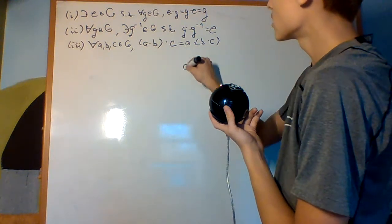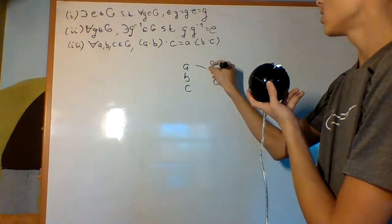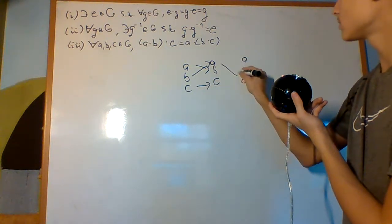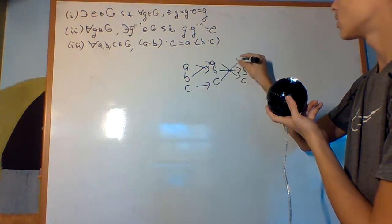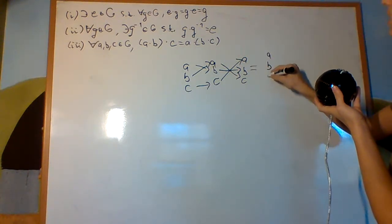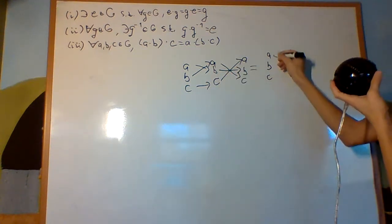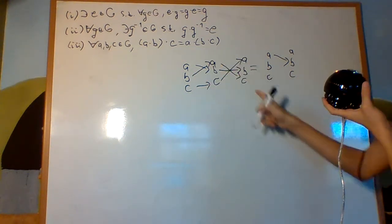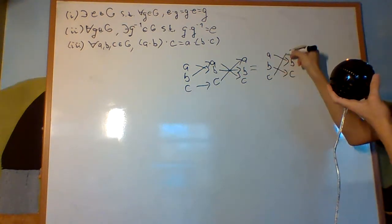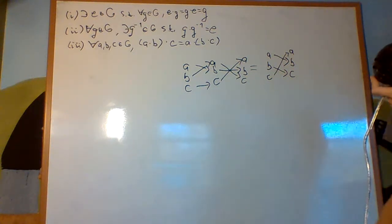And in this isomorphic group, if I were to have some permutation and then some other permutation, like that, maybe, it'd just be composing them again. Right? So, A to B, B to B, A to B, B to A, A to C, B to C, C to A. Right? That's what you get out of this.